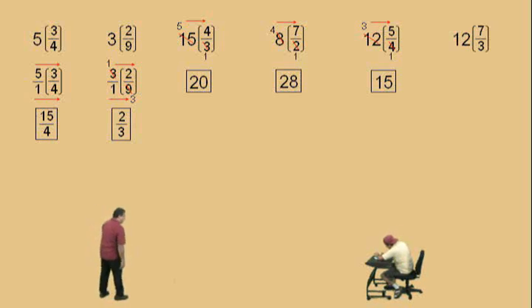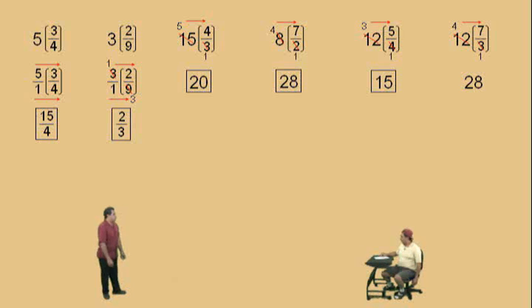Now, 12 times 7 thirds, Charlie? 3 goes into 12 4 times, 4 times 7, 28. Very nice there, Charlie. That is true.